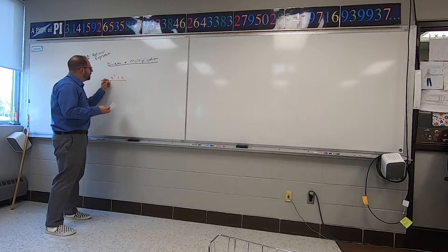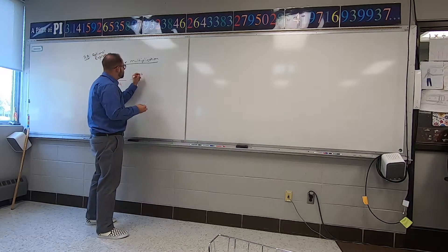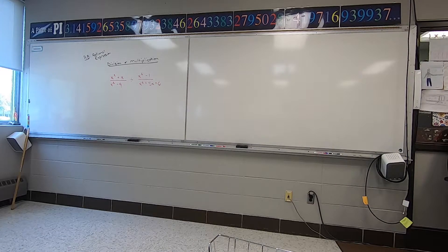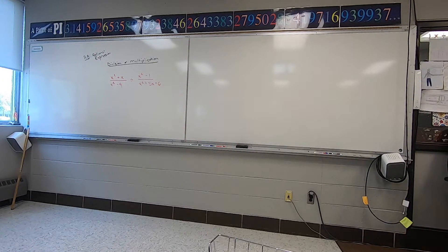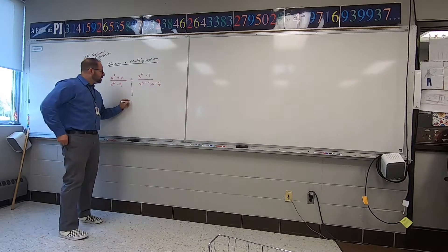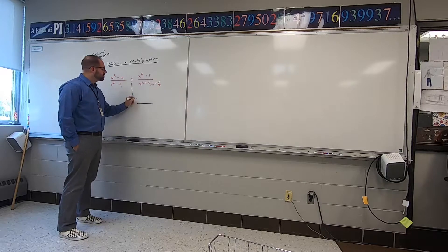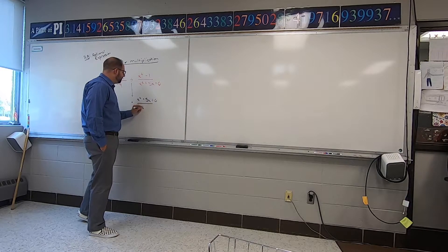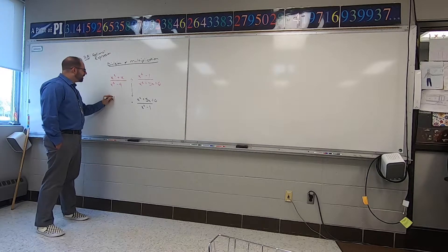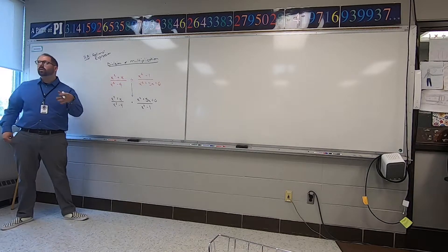We'll start with this first problem: X squared minus one and X squared plus five X plus six. It's a division problem. So what's the rule from yesterday? You flip the second fraction. The second fraction is going to flip — you only do this for division. If it's a multiplication problem, you would not do this. You change this to multiplication, because we don't actually divide fractions. We multiply by the reciprocal. The fraction after the division sign flips — that is called the reciprocal. The first fraction will not change.